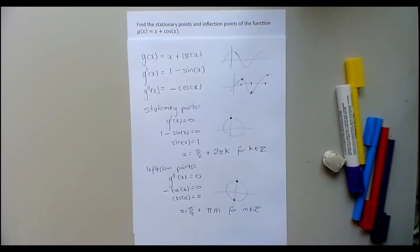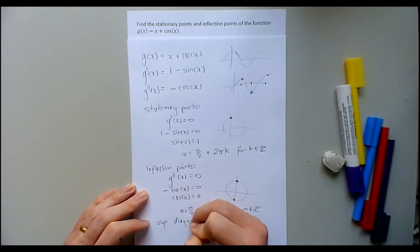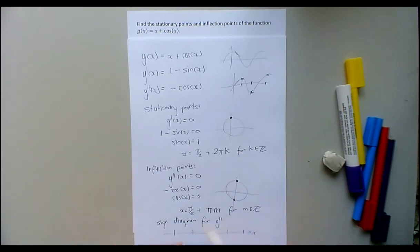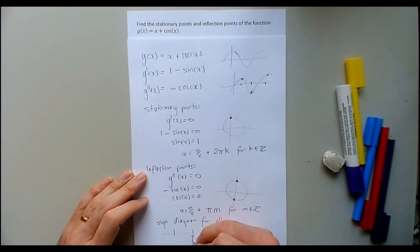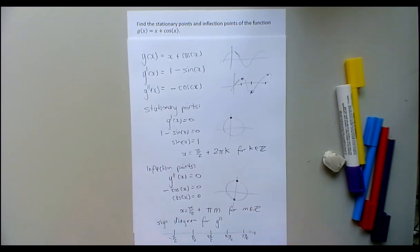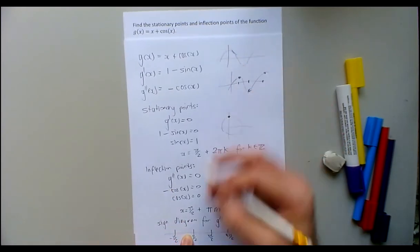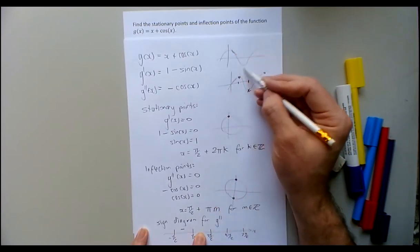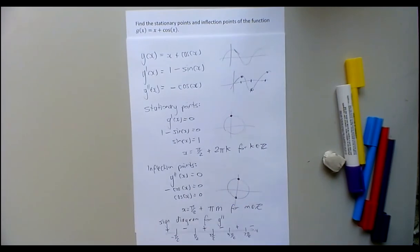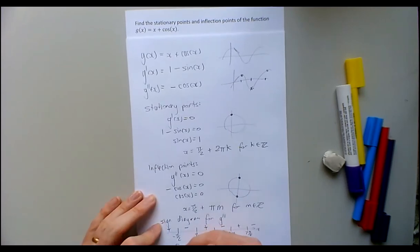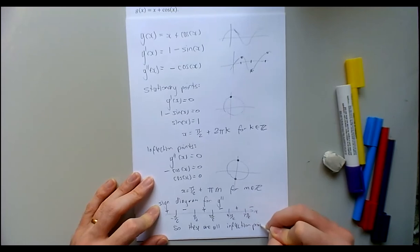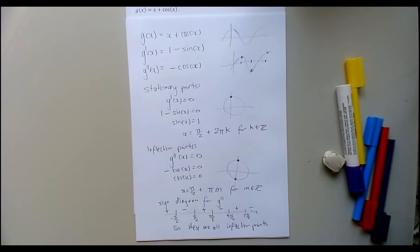I noticed I haven't done the last step — I need a sign diagram for g''(x) to confirm these are true inflection points. g''(x) = -cos(x) is zero at π/2, 3π/2, -π/2, and so on. Between those points, -cos(x) does switch between positive and negative — I can see that on the cosine graph — so they really are all inflection points.